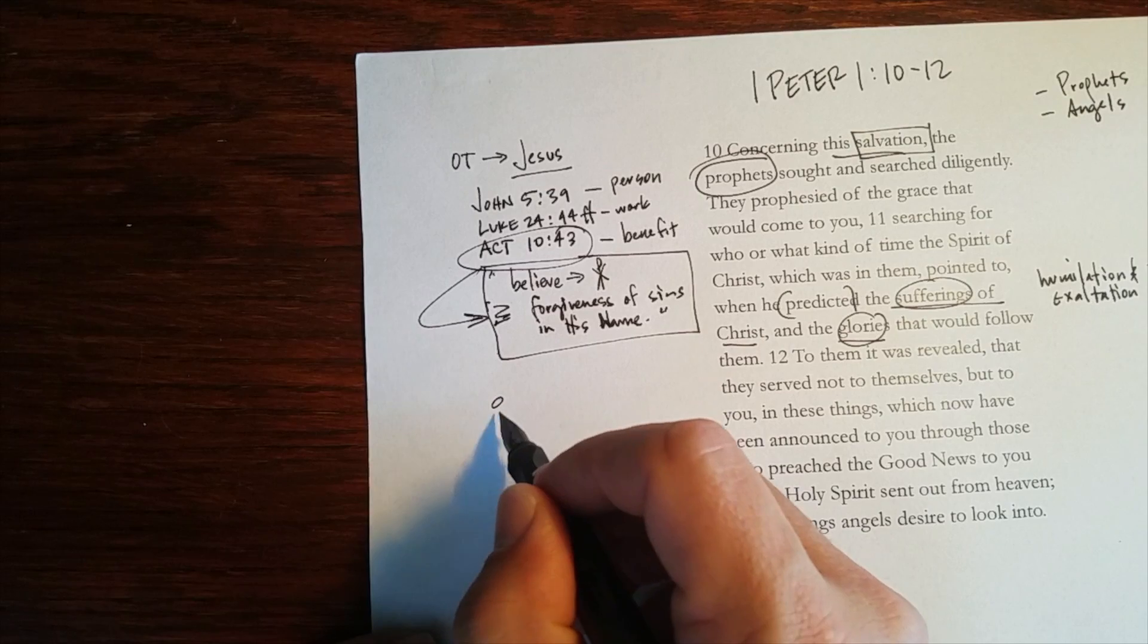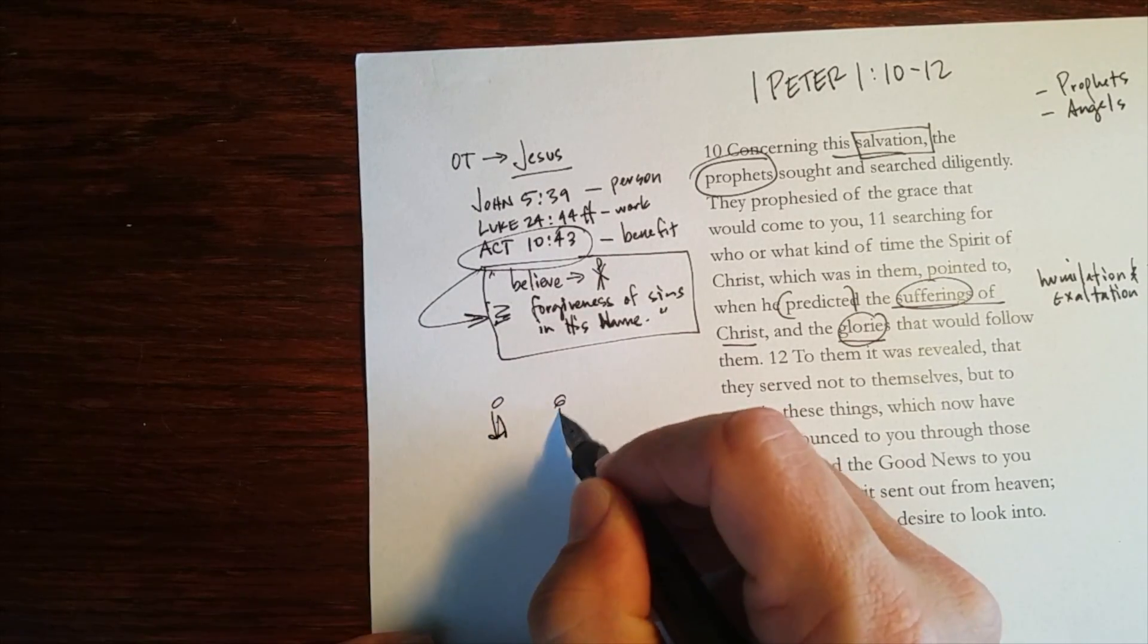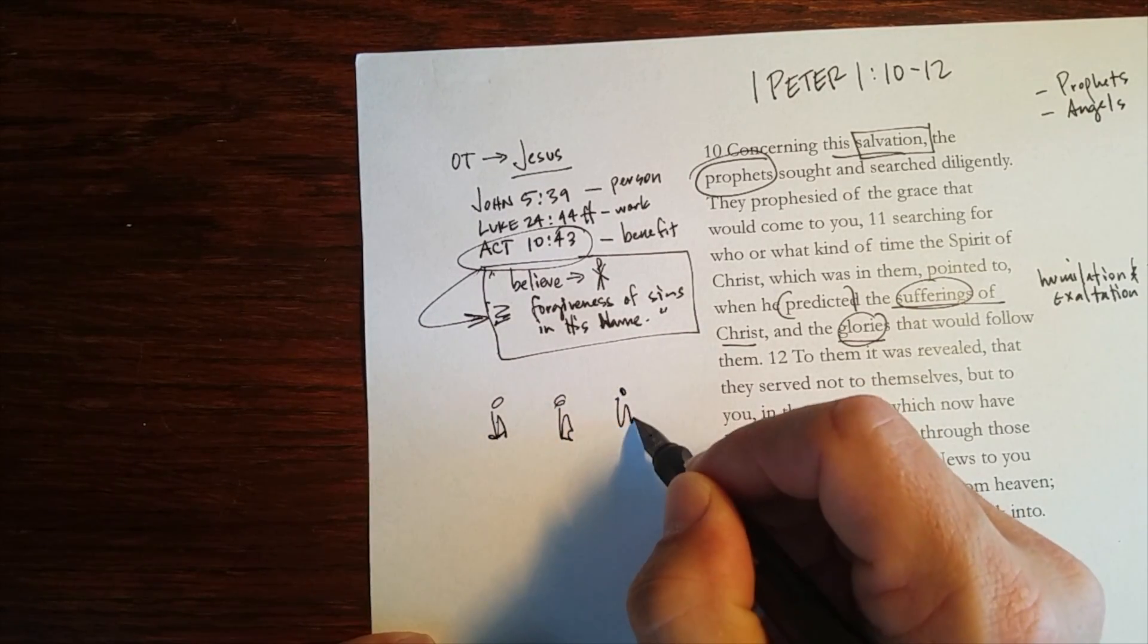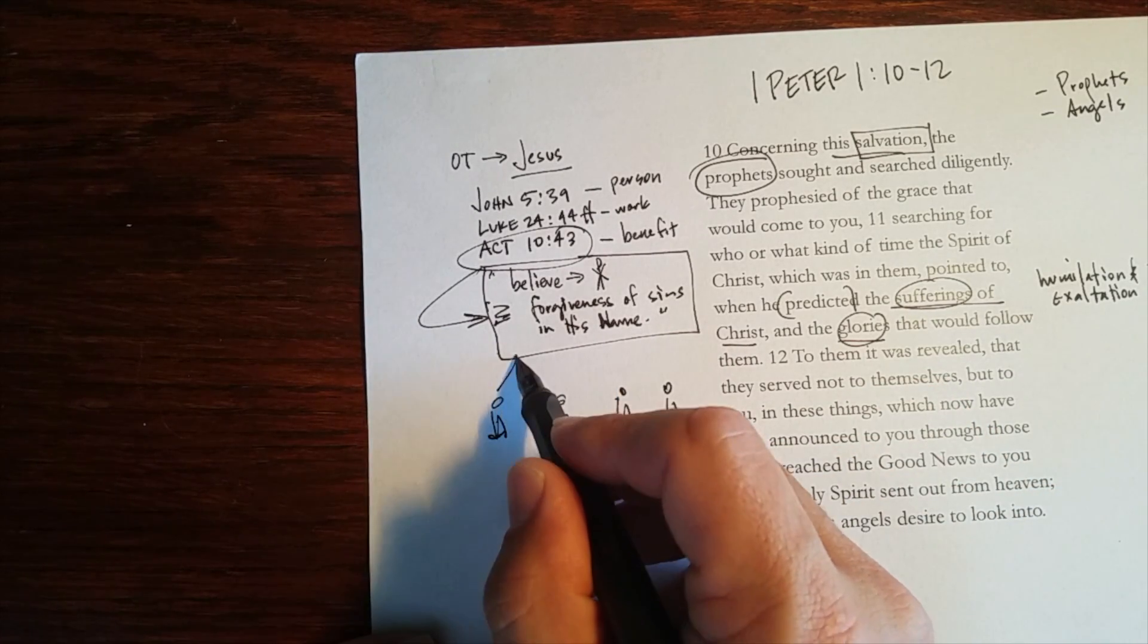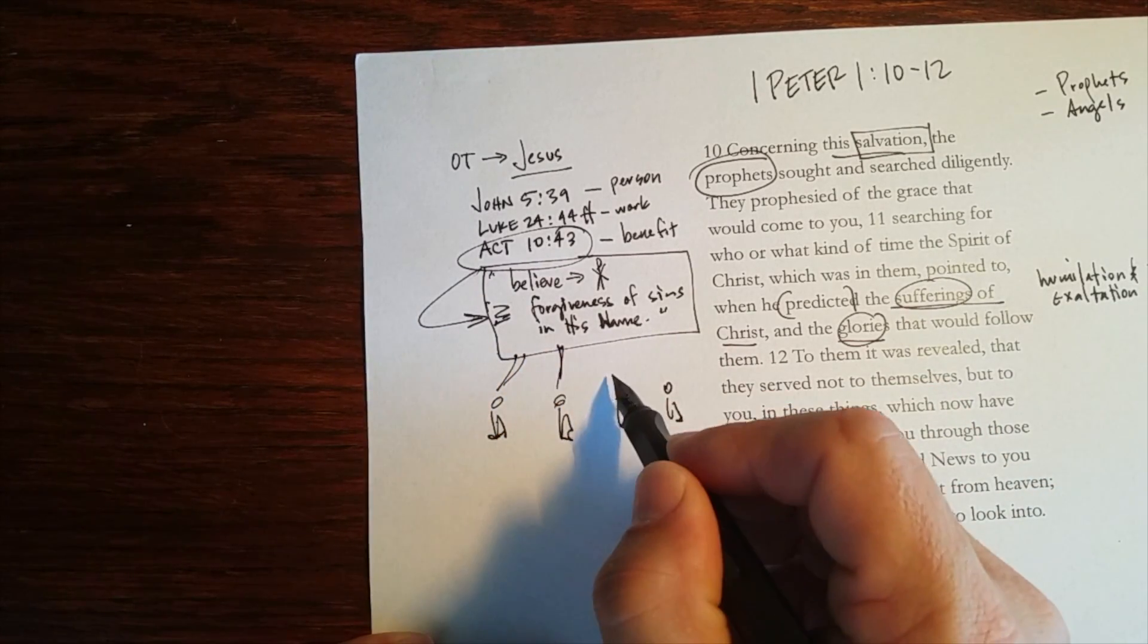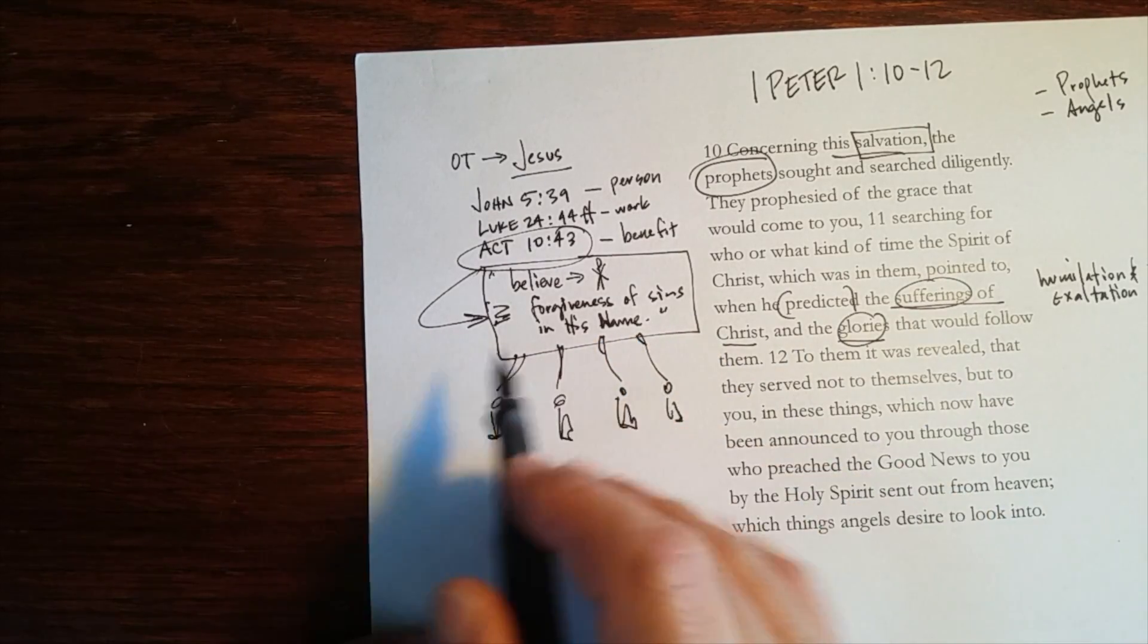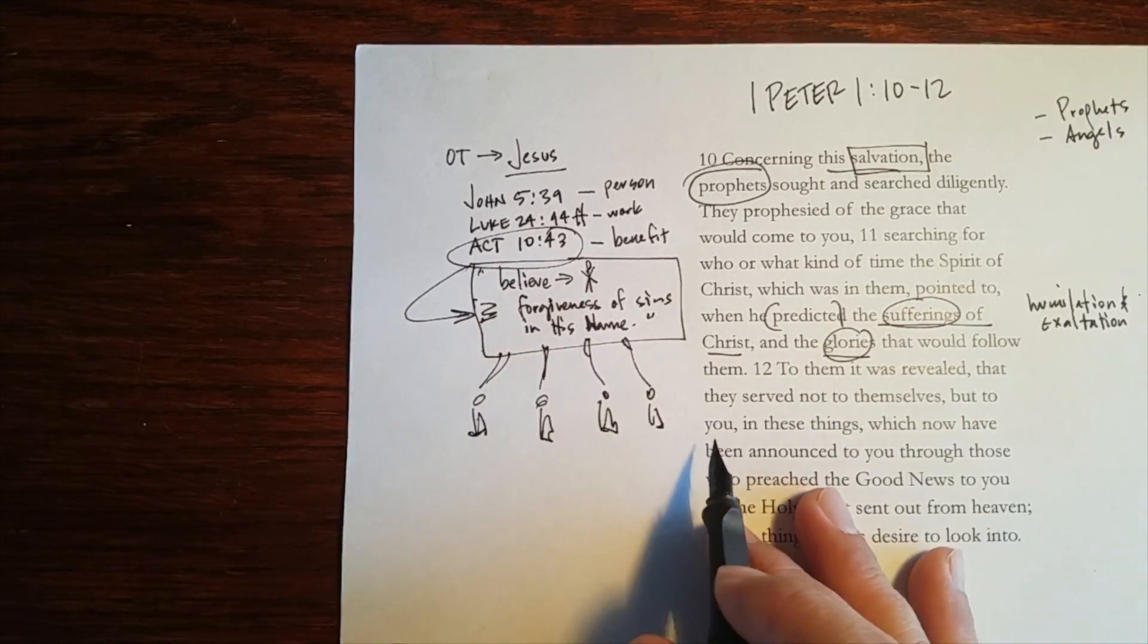This right here is a summary of the prophetic preaching. So that when you come across Isaiah, when you come across Jeremiah, when you come across Elijah, when you come across Moses, when you come across all these Old Testament preachers, this is what they were preaching. So that the content of the Old Testament is Christ.